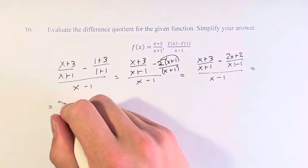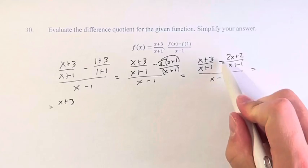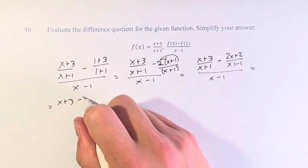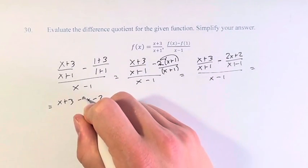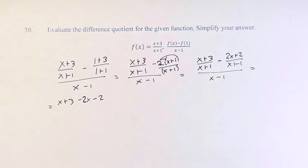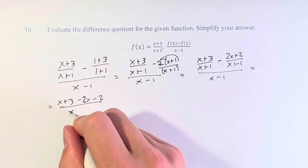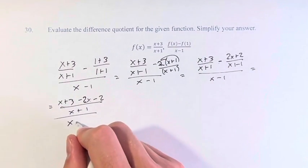And now we can subtract these, so we have x plus 3 minus 2x plus 2, which becomes minus 2x minus 2. Don't forget to distribute the negative. This is over x plus 1, which itself is over x minus 1.